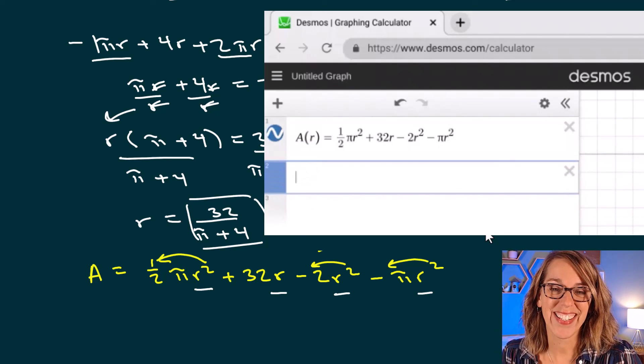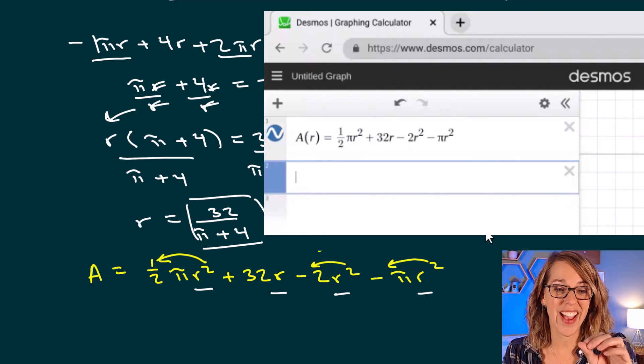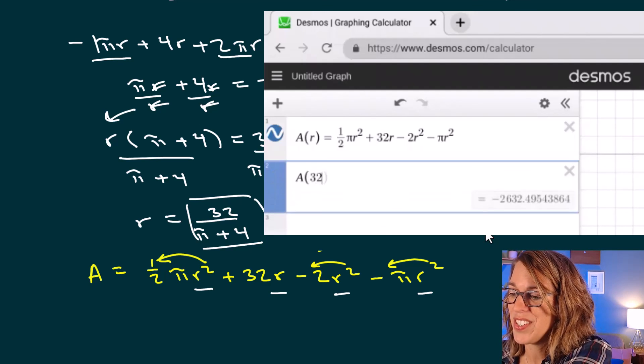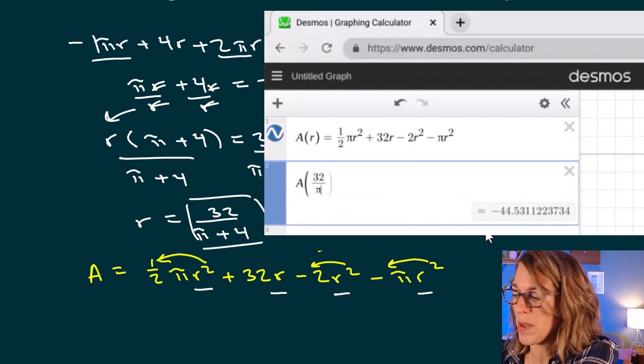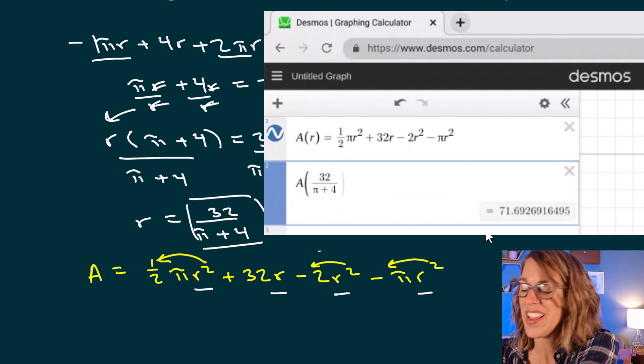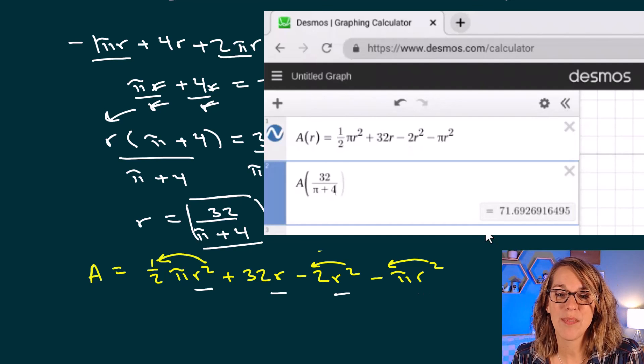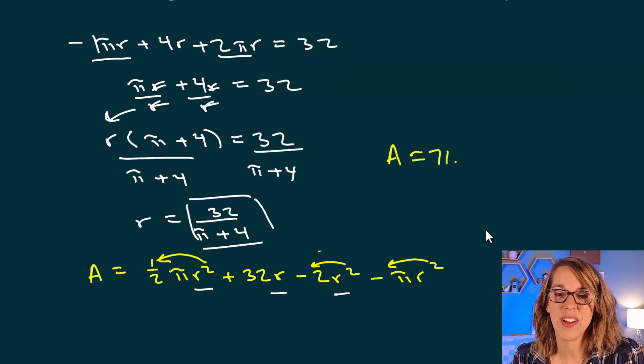Next, we're going to ask Desmos to evaluate this area at our 32 divided by pi plus 4. So I'm going to type in a of 32 slash, so divided by pi plus four, and we get our total area. So our final area is approximately 71.69 square feet.